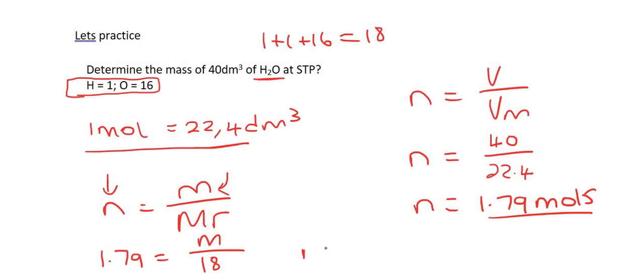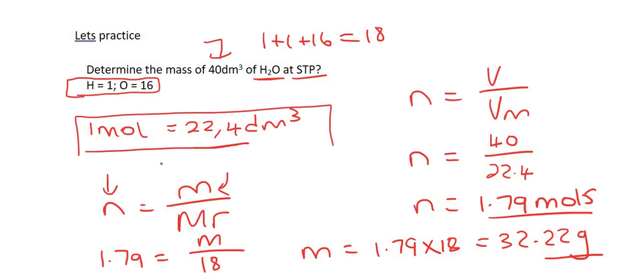We could now work out the mass by saying, the mass is equal to 1.79 multiplied by 18, and that's going to give us 32.22 grams of H2O. So we can take the volume, and do a couple of calculations, and we can actually determine the mass. This is pretty cool. It's all because we know that if you are at STP, then we can use this information over here. Please remember that number.